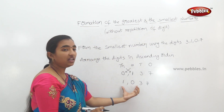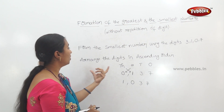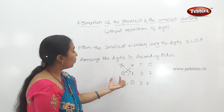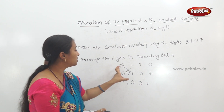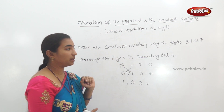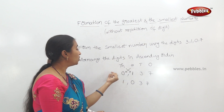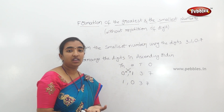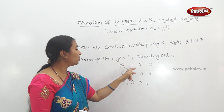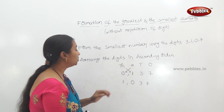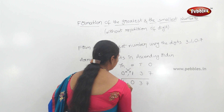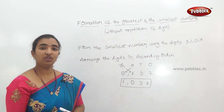This is the smallest number in ascending order. The answer is 1,037.